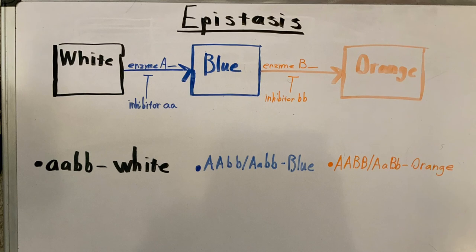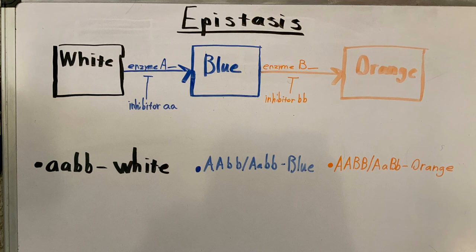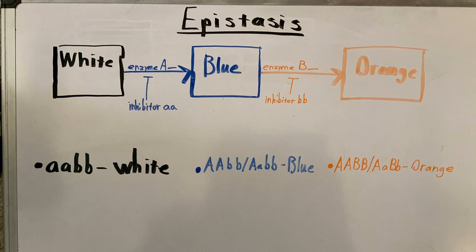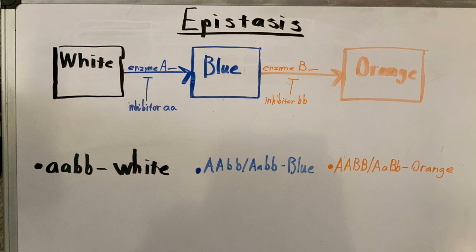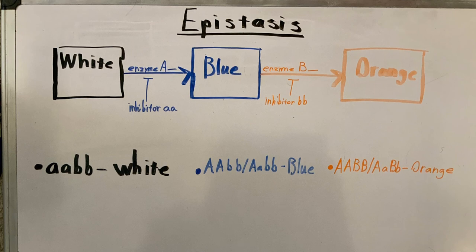Epistasis also explains why multiple different genotypes can lead to the same phenotype. Above, there is a blue phenotype made possible by a homozygous dominant A and homozygous recessive B, and a heterozygous dominant A and homozygous recessive B. For the orange phenotype, there's a homozygous dominant A and homozygous dominant B, and a heterozygous dominant A and heterozygous dominant B.